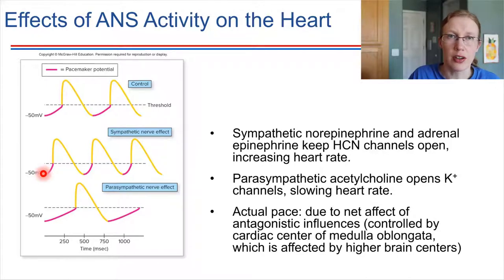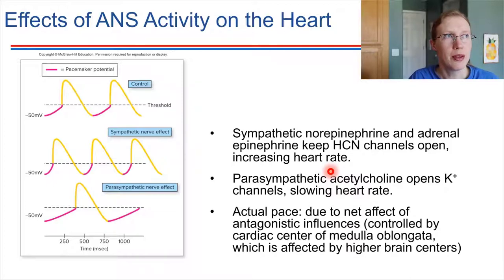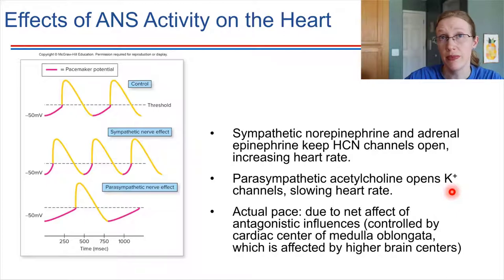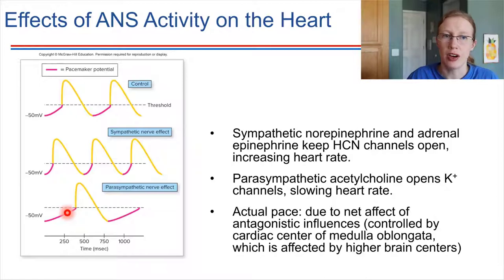The parasympathetic division — the rest and digest division — uses a different neurotransmitter: acetylcholine, which causes potassium channels to open. Remember that sodium and potassium gradients are in opposite directions. So if potassium channels open, potassium flows in the opposite direction from sodium, and it takes longer for the sodium leakage to reach threshold. This elongates that section of the graph and spreads out the heartbeats — that's the nervous system influencing heart rate.